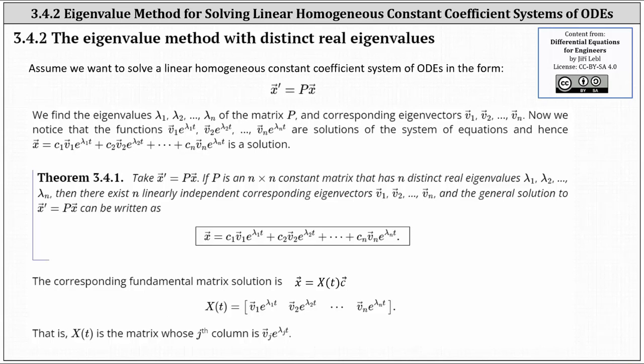Welcome to a lesson on solving a linear homogeneous constant coefficient system of ODEs in the form x prime equals p times x, using the eigenvalue method with distinct real eigenvalues.